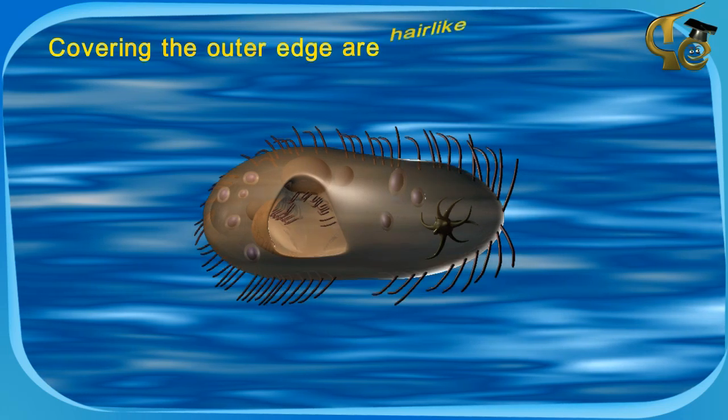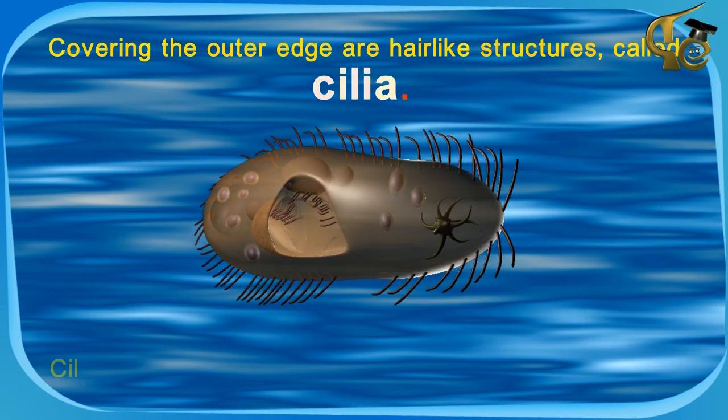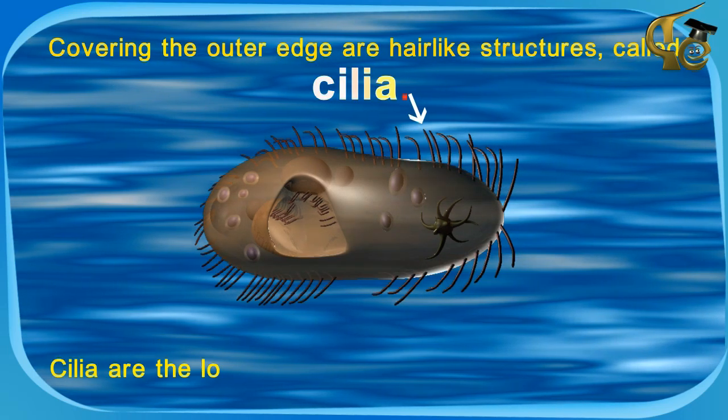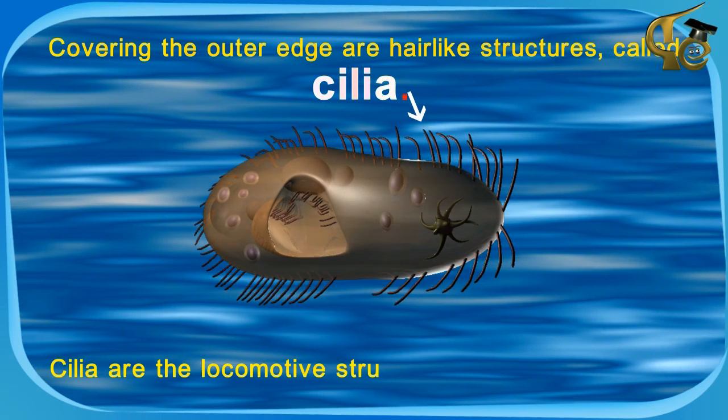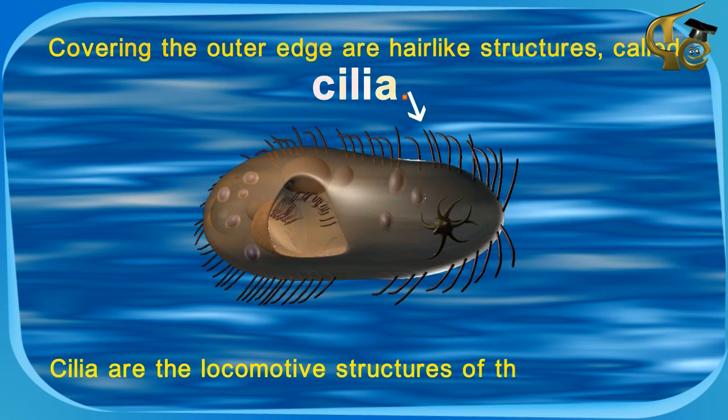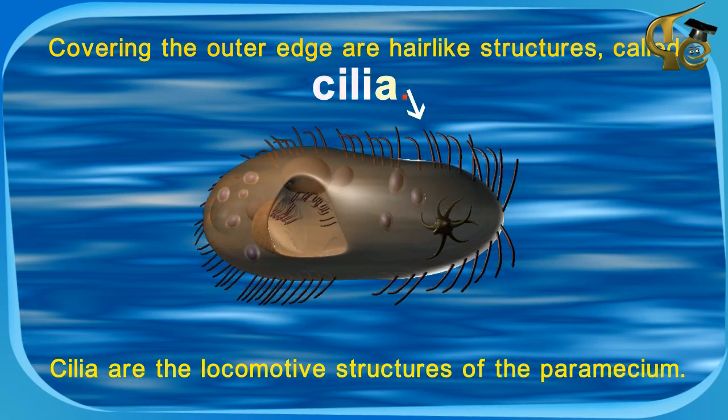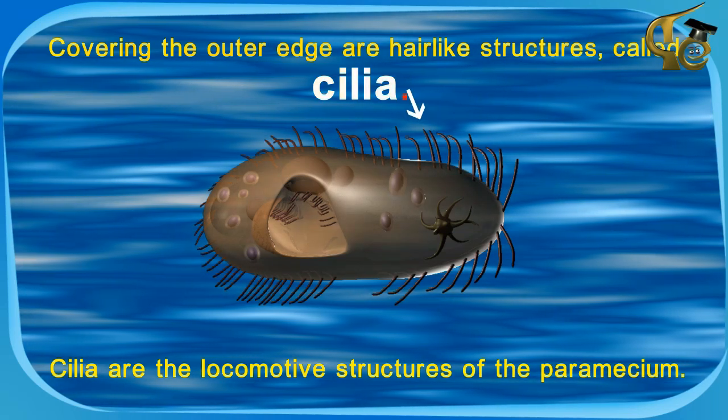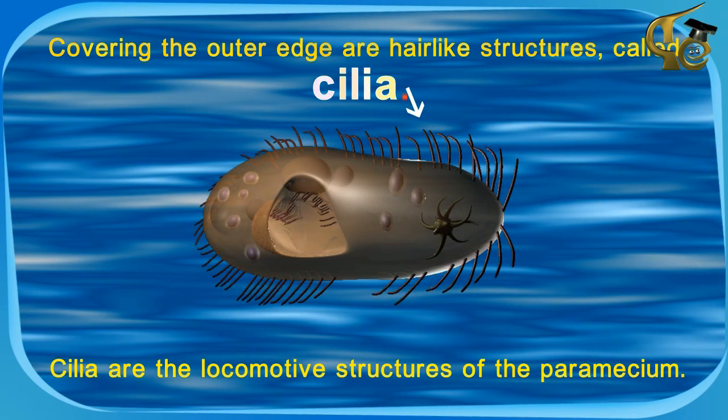Covering the outer edge are hair-like structures called cilia. Cilia are the locomotive structures of the paramecium.